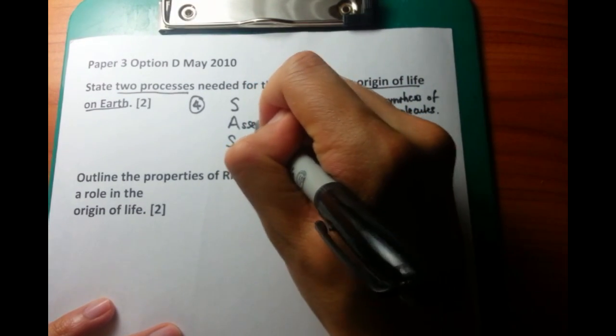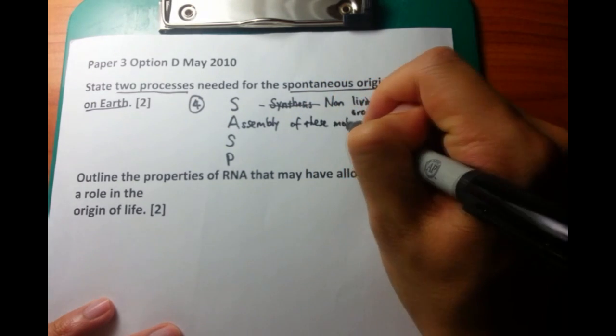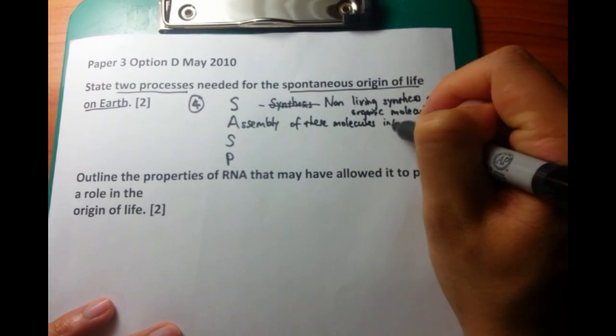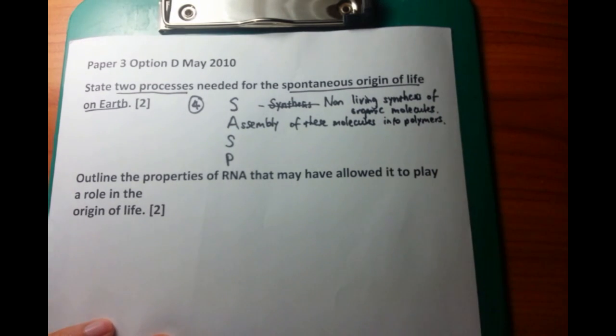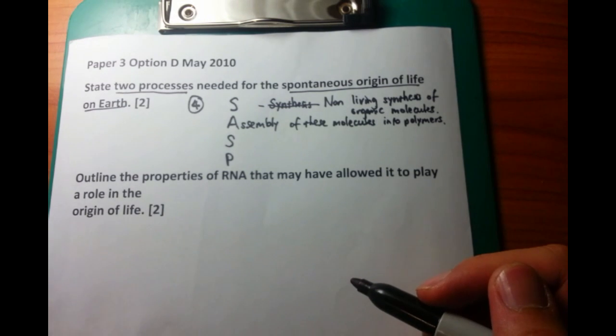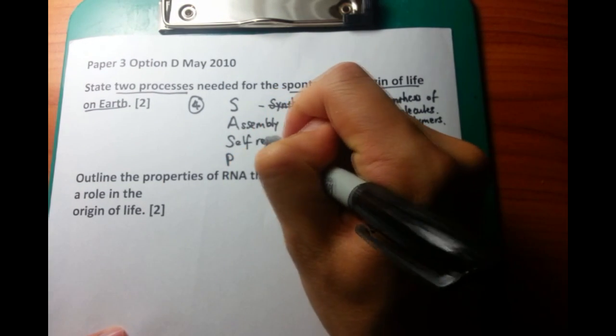Now the second thing is the assembly of these molecules into polymers. After you have an organic molecule, for example, you just have a small organic molecule within itself, and that molecule has to be arranged into things which are larger, that can be used to make up the building blocks of life. It's not enough just to have small organic molecules. They need to be built up to become larger.